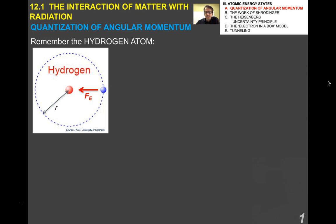To start off, I'm going to introduce something called angular momentum. Remember we studied linear momentum and talked about conservation of linear momentum. Now we're going to talk about angular momentum. You will not have to, on the IB exam, do any derivation of angular momentum or treat it as a vector. The only reason I'm introducing it is because it's integral to understanding how energy levels relate to atomic orbits, the radius of orbits of electrons, and also to quantum numbers.